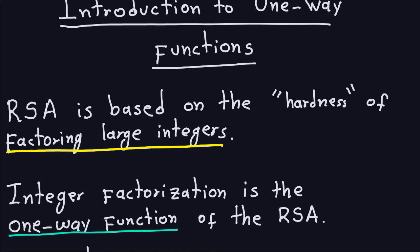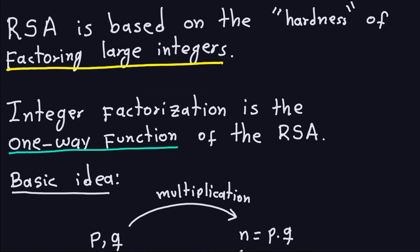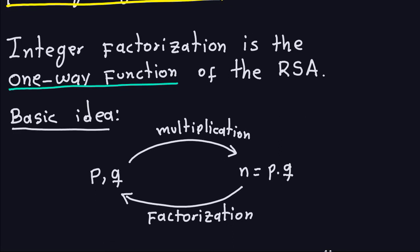The RSA algorithm we just studied is based on the hardness of factoring large integers. Hardness means it is difficult to factor large integers with techniques we have today, even with large computers. This integer factorization, on which RSA is based, is the one-way function of the RSA.